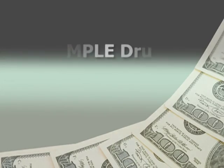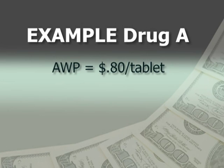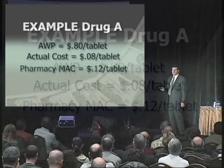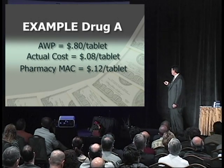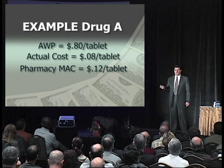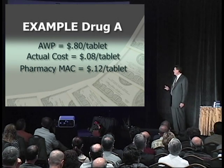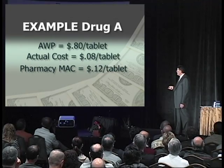I took a drug — roughly based on Alprazolam — and picked one of the strengths. We found a drug with about an $80 per 100 tablet AWP, so 80 cents a tablet. The actual cost of that was about 8 cents a tablet — about a tenth of the AWP. Pharmacies were set at a MAC of about 12 cents. The contracts we looked at showed pharmacies have to make about $10 a prescription to stay open, so there has to be some money on the buying side. The average MAC was about 12 cents.